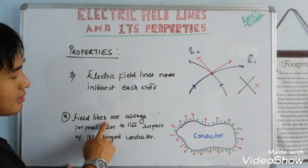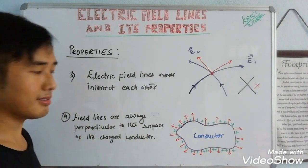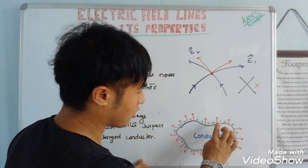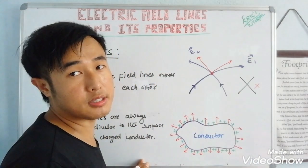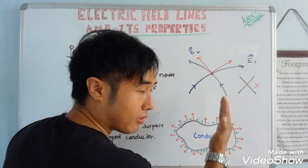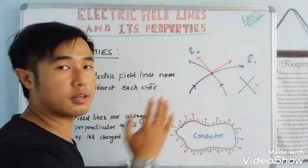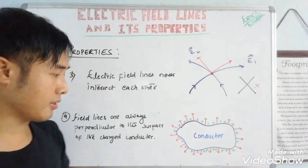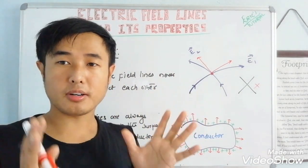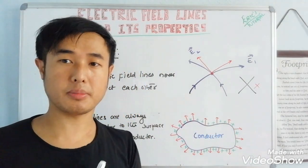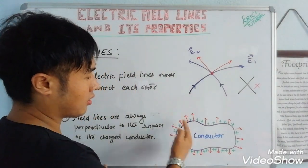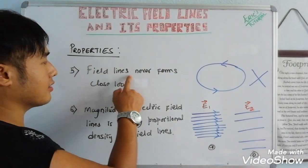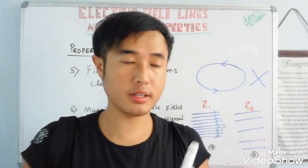The next property: field lines are always perpendicular to the surface of the charged conductor. For a positive charge, the field lines go perpendicularly outward. For a negative charge, the field lines go perpendicularly inward toward the surface.